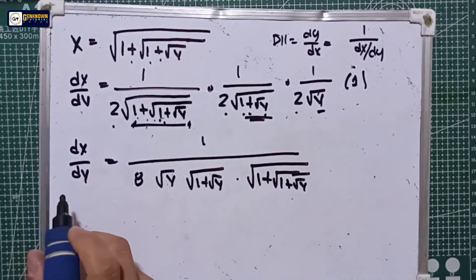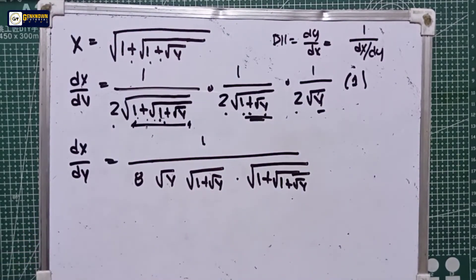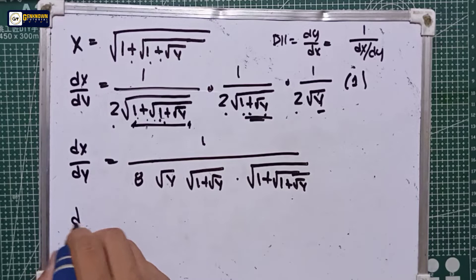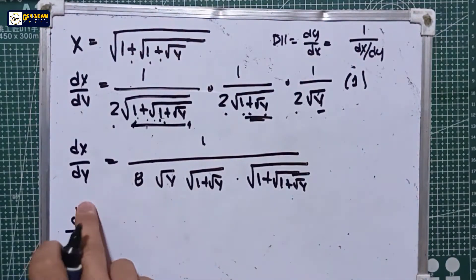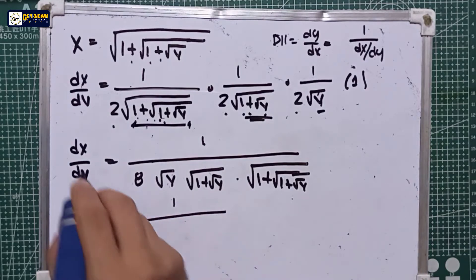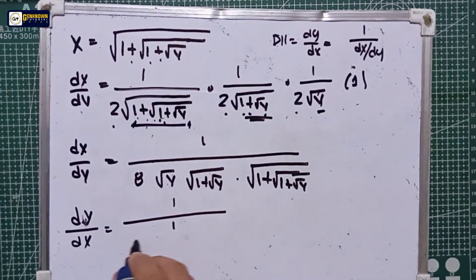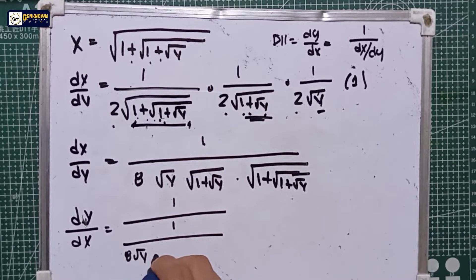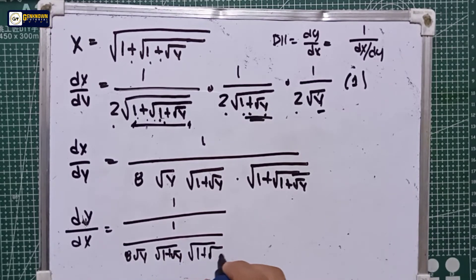Under the inverse function rule, dy/dx is equal to 1 over dx/dy. So dy/dx is equal to 1 over 8 times the square root of y, times the square root of 1 plus the square root of y, times the square root of 1 plus the square root of 1 plus the square root of y.